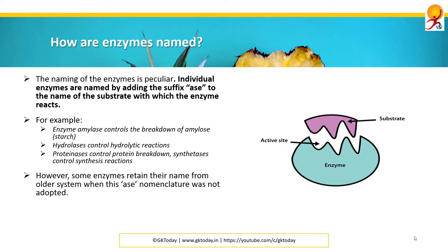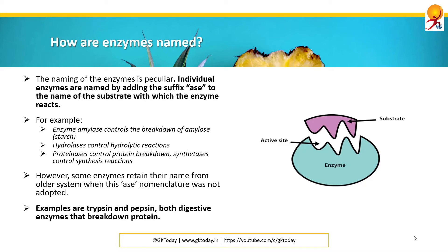However, some enzymes retain their name from an older system when the -ase nomenclature was not adopted. An example would be trypsin or pepsin, both digestive enzymes that break down protein.